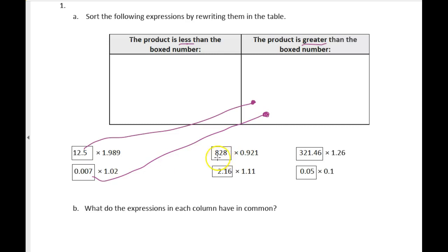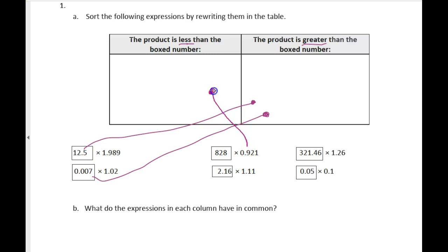This one we've got eight hundred and twenty eight, and we're multiplying by something just slightly less than one — nine tenths. So it's going to get smaller by that one tenth, and this one is going to go in the 'less' column.